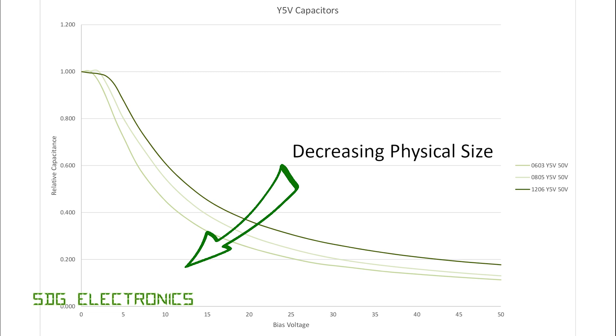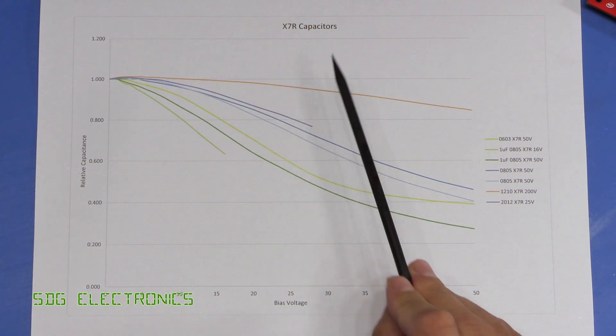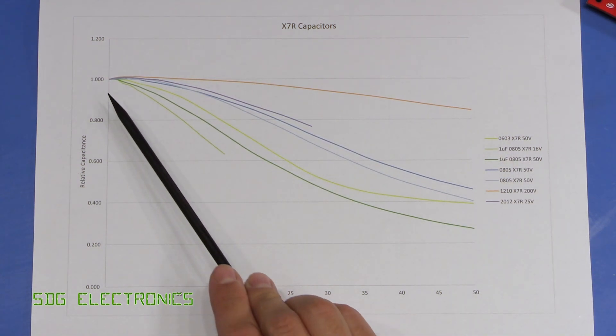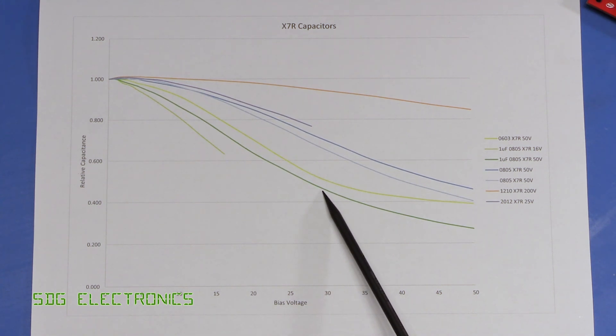And then we've got the X7R dielectric capacitors and I've tested a few parameters here, so different case sizes, different working voltages, and then different capacitance values. So these are all 100 nanofarads except for these two one microfarad capacitors.